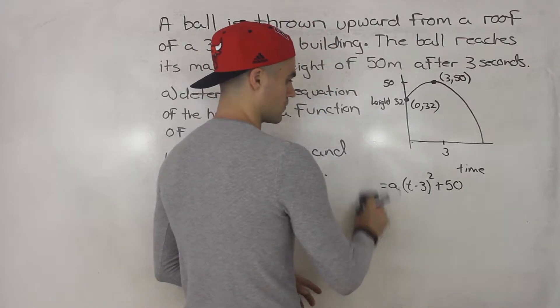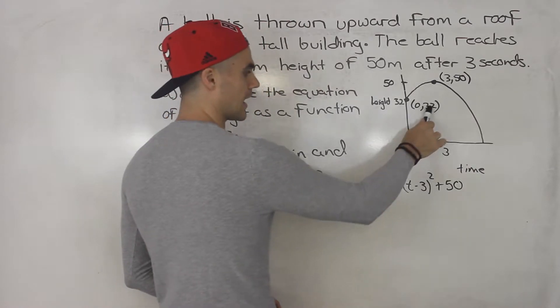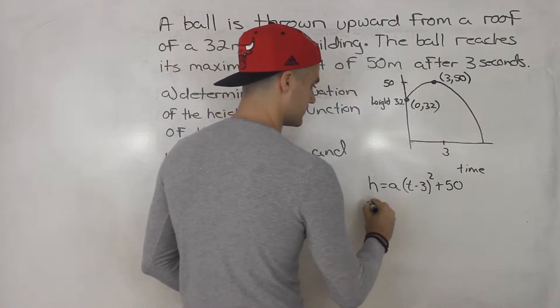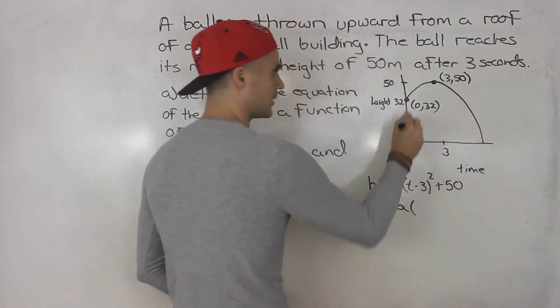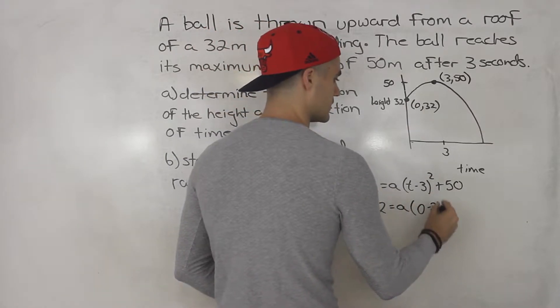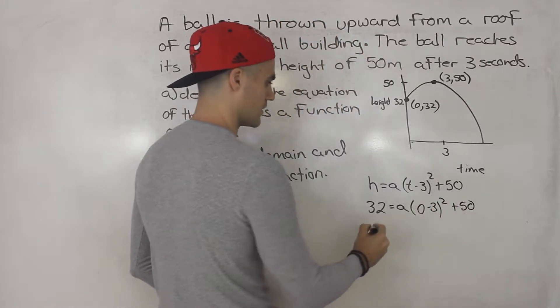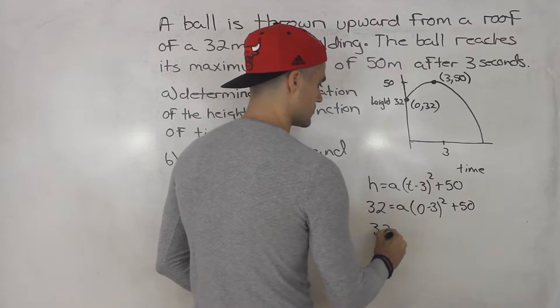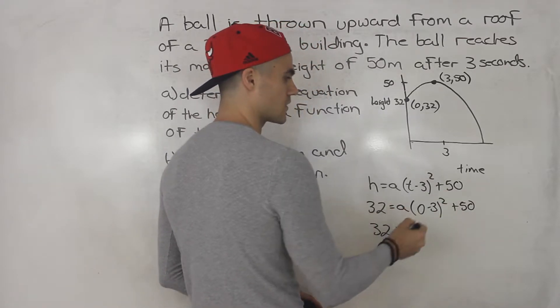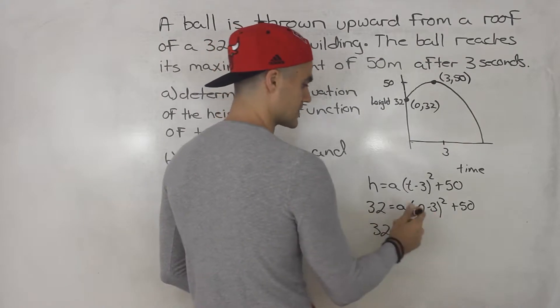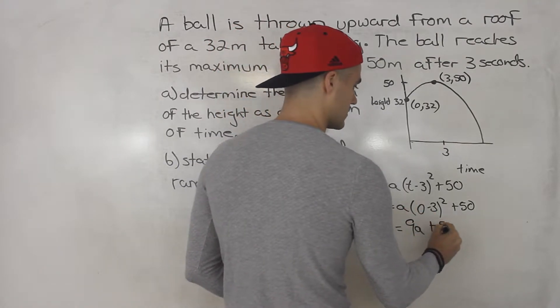So actually this shouldn't be a y, this could be an h here. So we could plug in a height of 32. A we're solving for, then we plug in 0 for t. This would be plus 50. So this would be 32 equals 0 minus 3 is negative 3. Negative 3 squared is 9. So 9 times a, that is 9a, plus 50.